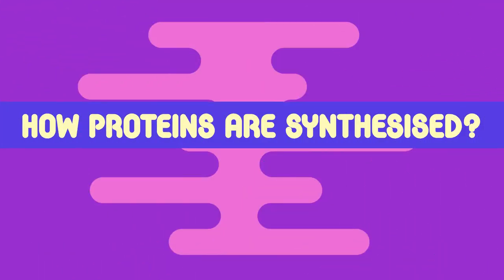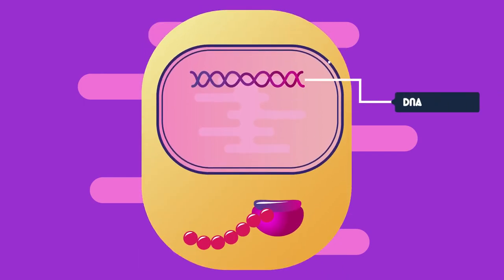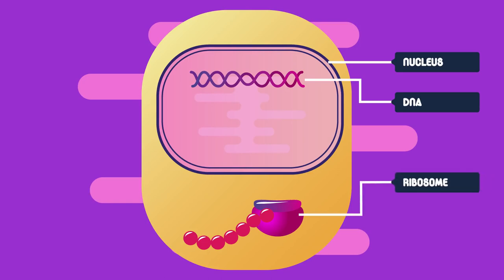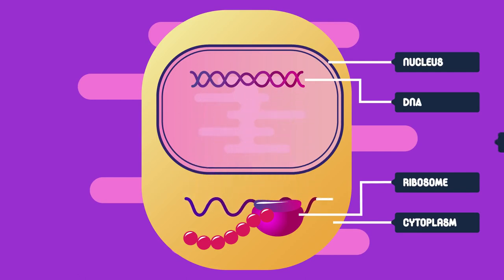So let's now look at how proteins are actually synthesised. The DNA is in the nucleus and cannot move, but the ribosomes in the cytoplasm are where the proteins are made. This means the code from the DNA needs to be copied and carried across to the ribosome by a molecule called messenger RNA, or mRNA, before the protein can be made.